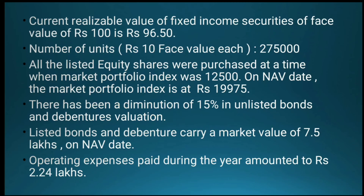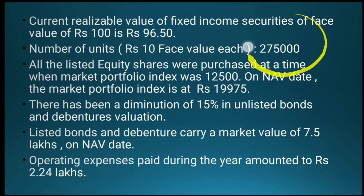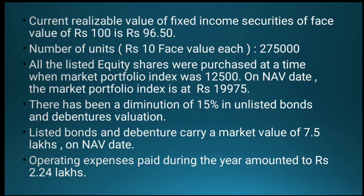Total NAV comes to 72.3637 lakhs. NAV per unit = Total NAV ÷ Number of units = 72.3637 ÷ 2.75 lakhs = 26.314. So NAV per unit is 26.314.